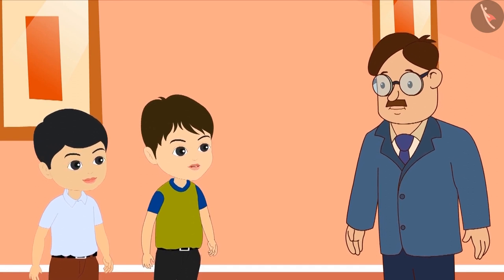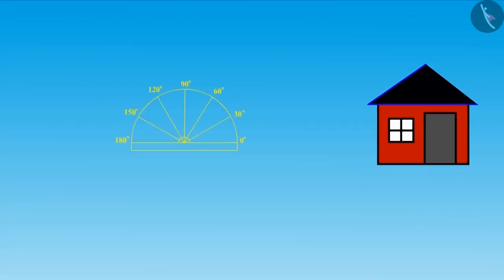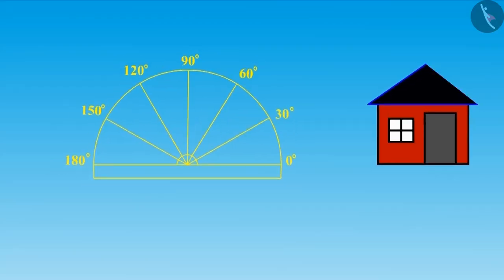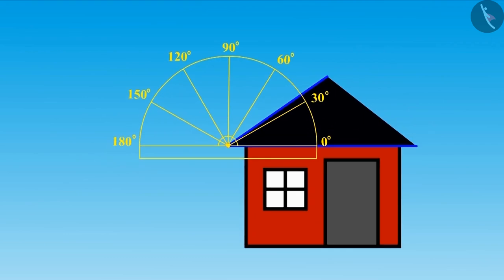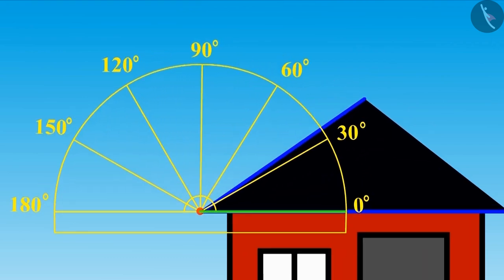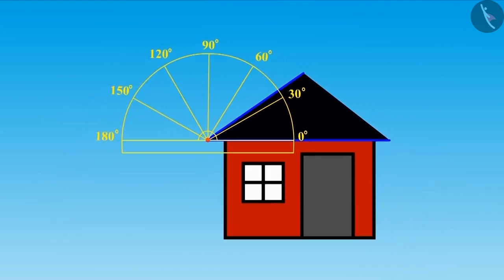But how is that, uncle? Look kids, to measure angles, we need to make sure where the center point of the protractor is placed. This center point has to be placed at the vertex of the angle and this arm should be aligned with the baseline of the protractor. Only then will our answer be right.